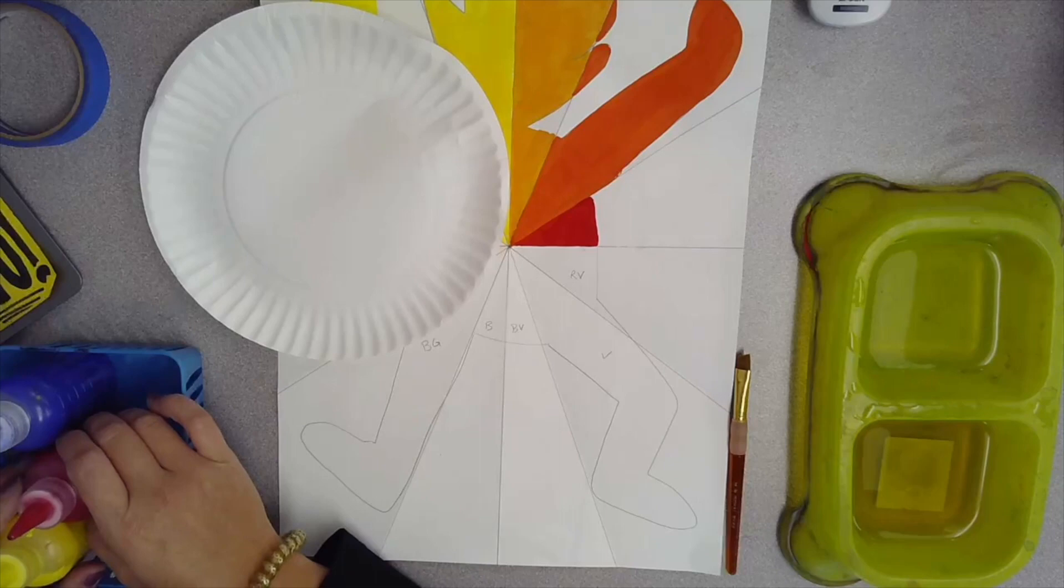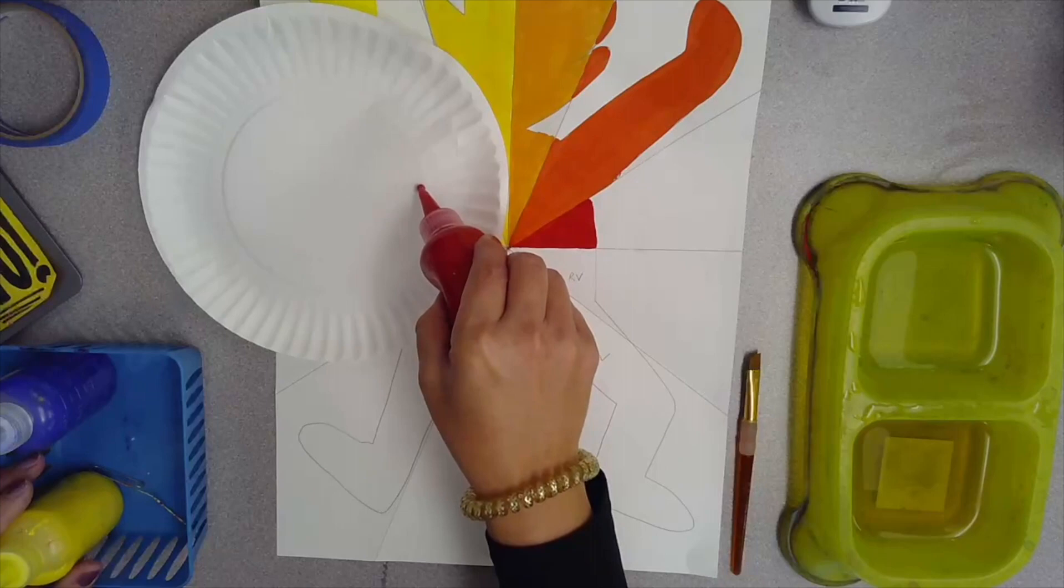Today we're going to paint red violet to yellow green. You'll need red and blue to start off with.